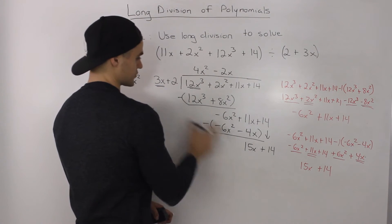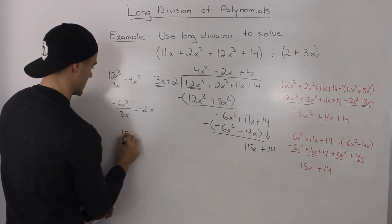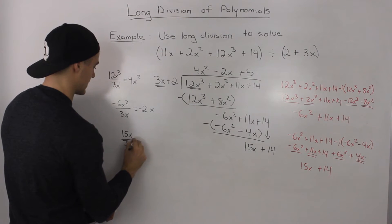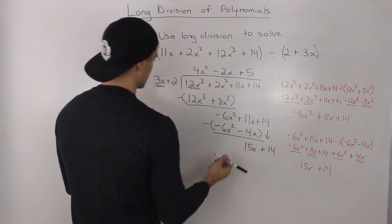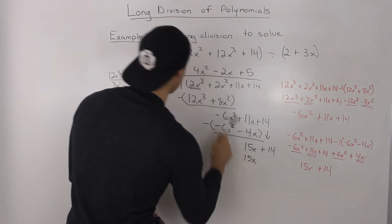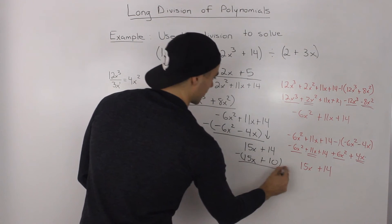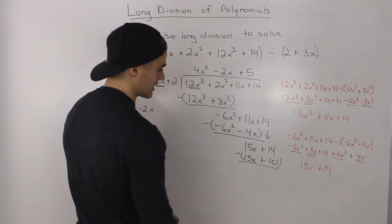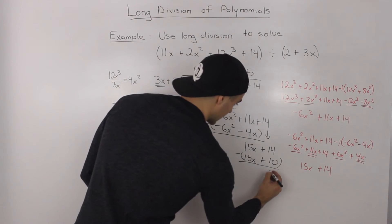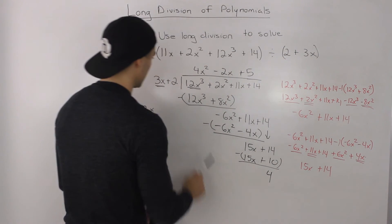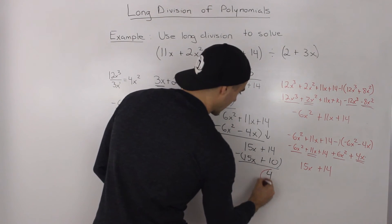We see how many times 3x goes into 15x: 15x divided by 3x, the x's cancel, and 15 divided by 3 is 5. So 5 times 3x is 15x, and 5 times 2 is 10. When we subtract: 15x minus 15x is 0, and 14 minus 10 is 4. Since 3x plus 2 cannot go into 4, that 4 is our remainder.